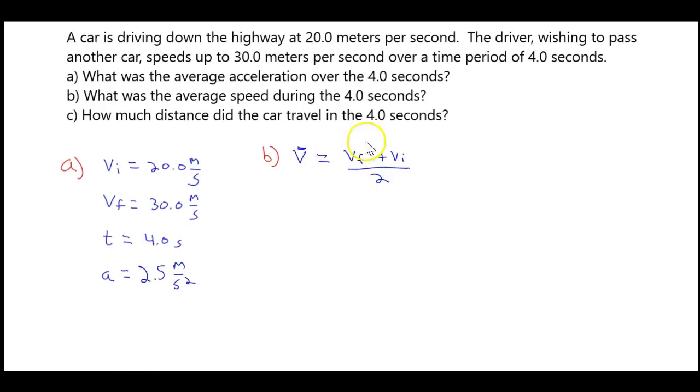The reason that this is the average velocity is because we are uniformly changing our velocity from 20 meters per second to 30 meters per second over this 4 second time interval. When we have a linear relationship, or if you consider graphing a linear relationship, the average of any two points in a linear relationship is simply the very center. And the very center is halfway between those two points. So in this case, if the two points we're talking about are a final and initial velocity, we're just looking for the halfway mark between them, and that will give us our average.